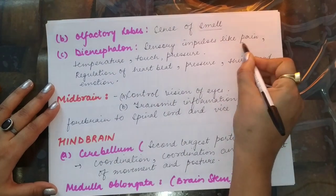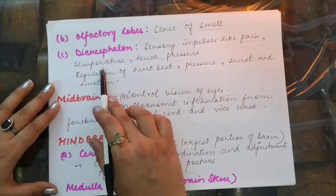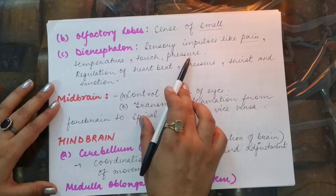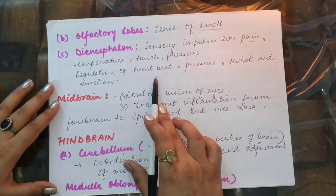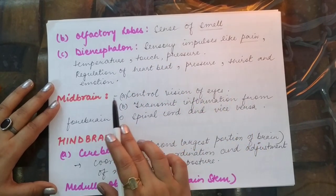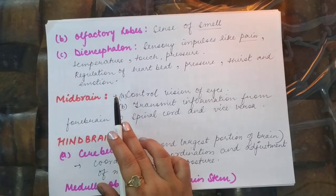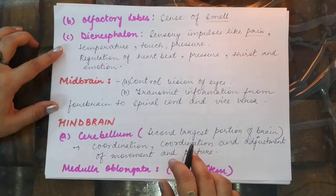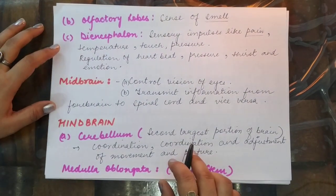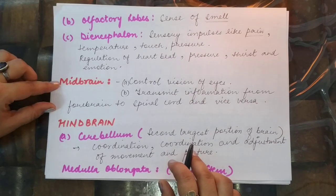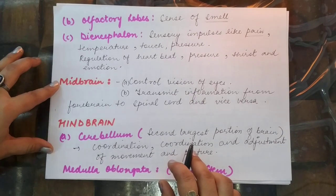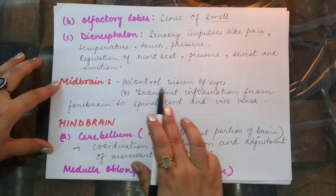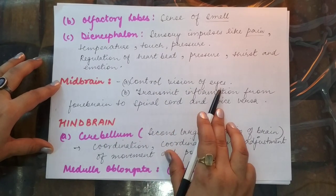The diencephalon controls the feeling of pain, temperature, touch, and pressure, as well as heartbeat, thirst, and emotion. The second part of the brain is the midbrain, which controls vision of the eyes.